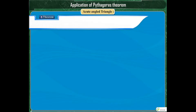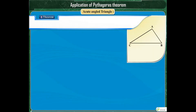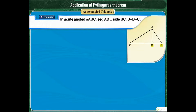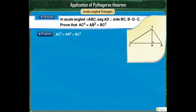First, we will consider the acute-angled triangle ABC. In acute-angled triangle ABC, segment AD is perpendicular to side BC such that point D lies between points B and C. Then we have to prove AC squared is equal to AB squared plus BC squared minus 2 into BC into BD.